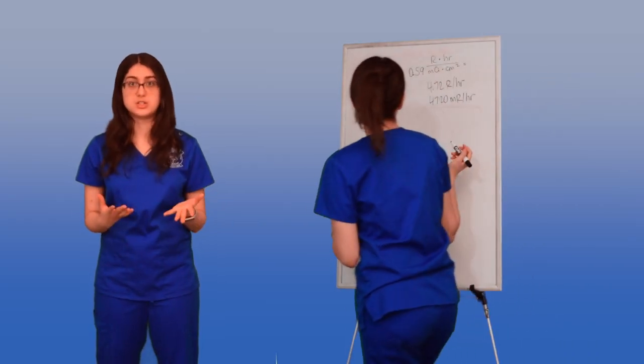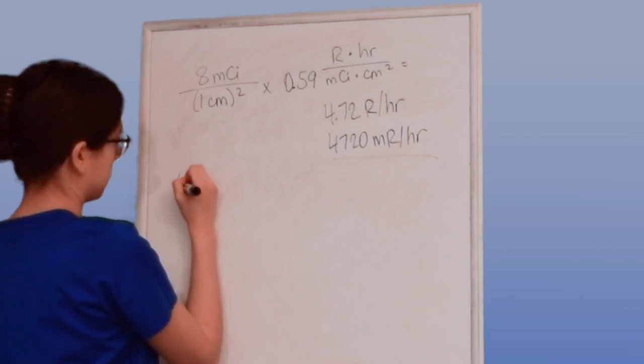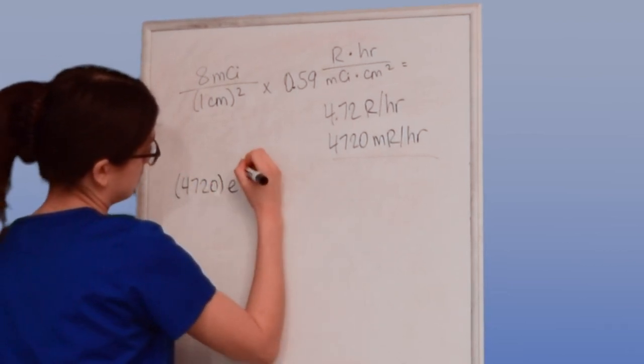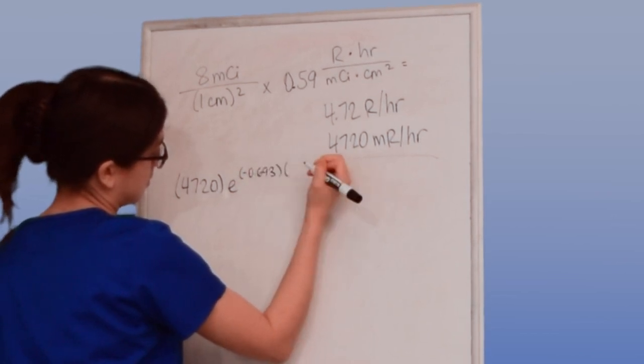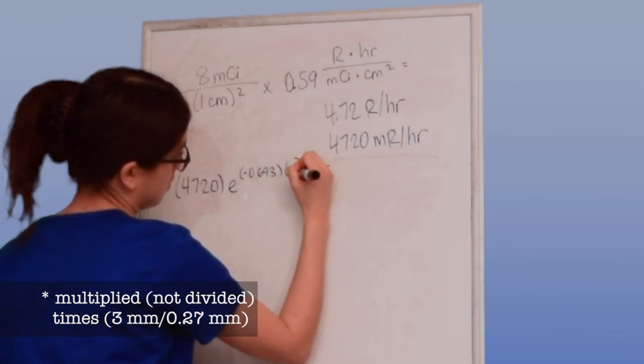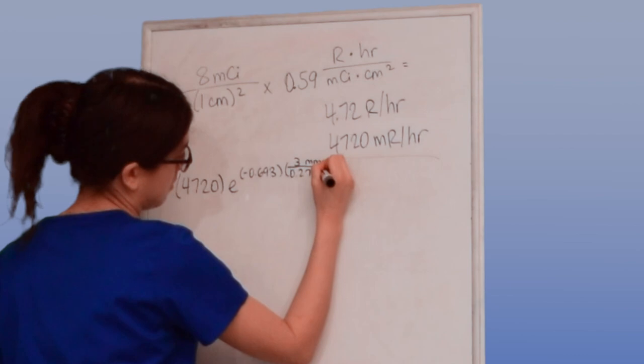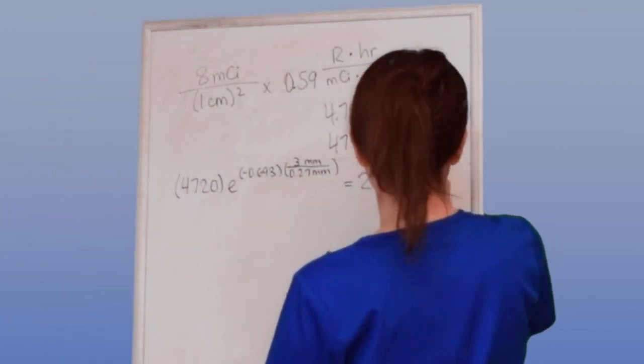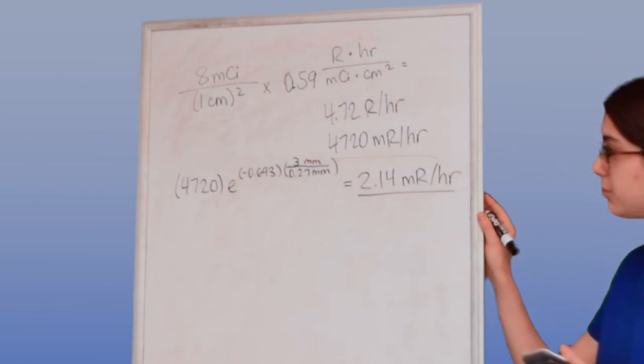I put on a 3 millimeter syringe shield. I'm going to use that intensity formula from earlier, and plug in my initial intensity, which is 4,720 millirentgens per hour, times Euler's number to the power of negative 0.693, divided by thickness of attenuator, divided by half-value layer, so that's 3 millimeters divided by 0.27 millimeters. Put that all in the calculator, and we get 214 millirentgens per hour.